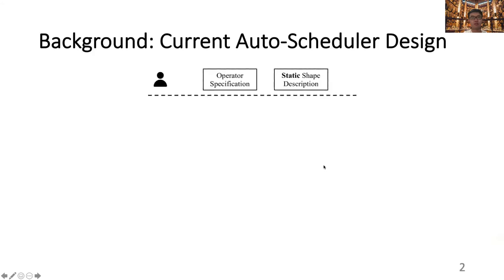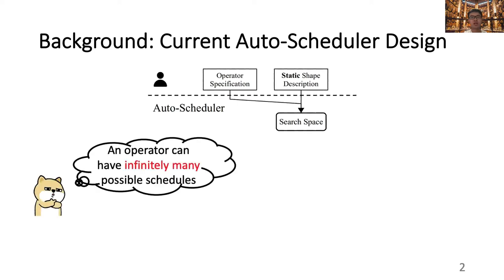Before diving into the details of DietCode, let us first do a quick review of the current auto-scheduler design, which starts with users providing an operator specification and standard shape description. Based on the provided information, the auto-scheduler automatically constructs a search space that includes all schedules under consideration. However, the key challenge is that an operator can in theory have infinitely many possible schedules.